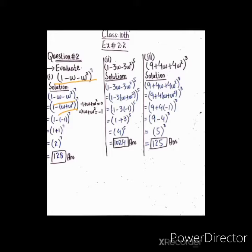آپ نے پڑھا تھا کہ sum of cube roots of unity is equal to zero، یعنی (1 + ω + ω²) = 0۔ اگر میں یہاں سے ω + ω² کی value نکالوں تو وہ minus one ہے۔ ω + ω² کی جگہ -1 put کر دیا۔ bracket کے باہر minus ہے تو minus × minus = plus۔ 1 + 1 = 2، اور 2^7 = 128۔